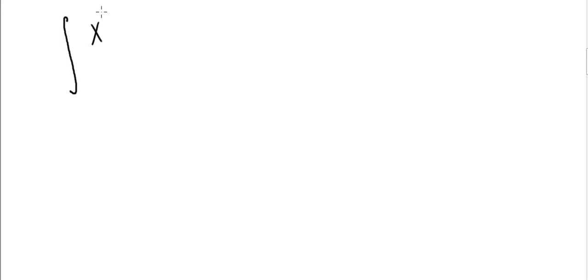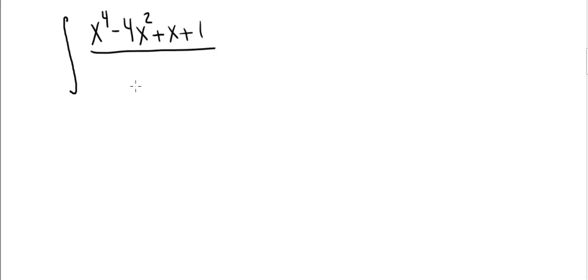We're going to use a technique called the method of partial fractions to evaluate the integral of x to the fourth minus 4x squared plus x plus 1, divided by x squared minus 4.